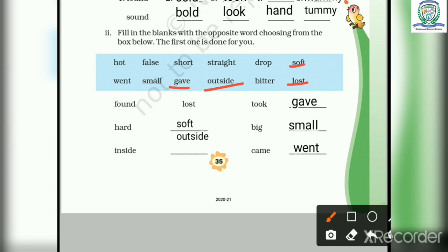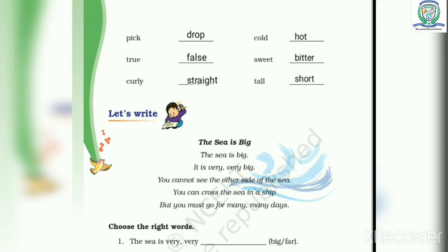Took ka opposite hai gave. Big ka small. Came ka went. Pick ka opposite hoota hai drop. True ka false. Curly ka straight. Cold ka hot. Sweet ka bitter. Aar tall ka opposite hoota hai short.